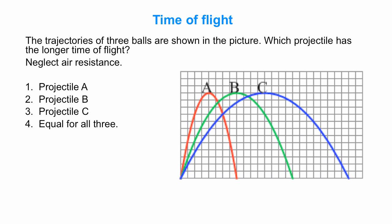We'll start with the time of flight. Quick question: we have these trajectories shown in the picture for A, B, and C. Which projectile has the longer time of flight? Our assumption is the projectiles are only influenced by the force of gravity. Think about which one you think, A, B, or C.